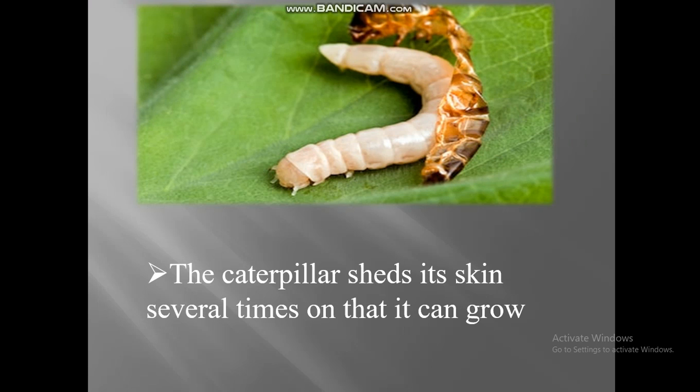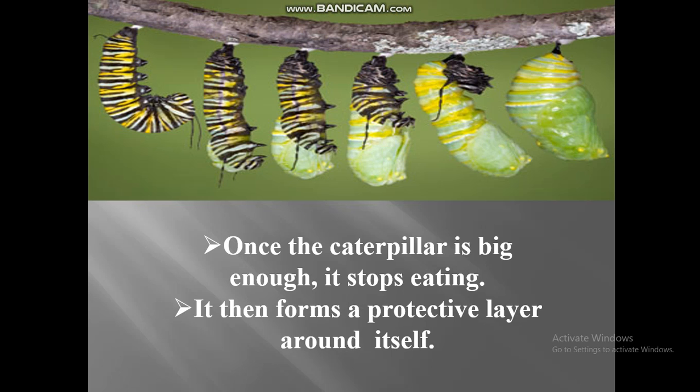The caterpillar sheds its skin several times so that it can grow. Once the caterpillar is big enough, it stops eating and then forms a protective layer around itself.